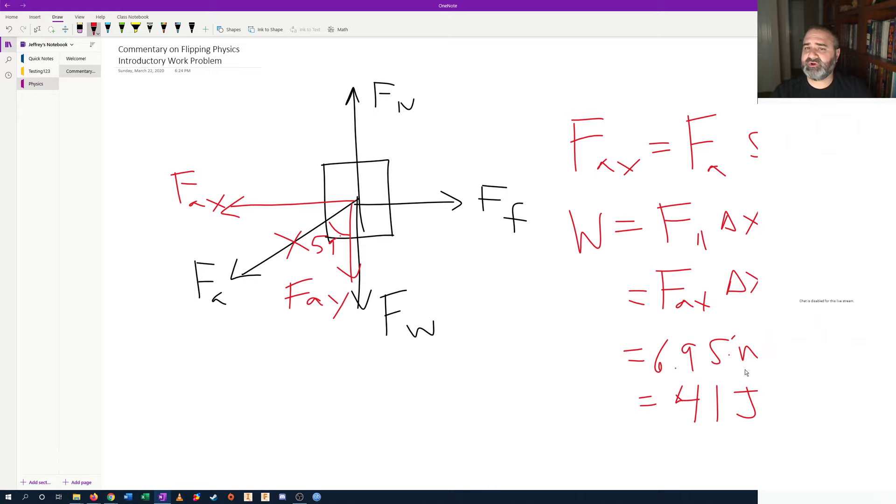A force perpendicular will, if anything, make an object turn, not cause an object to accelerate, not change the kinetic energy of the object. And so, do zero work from the scalar energy perspective.